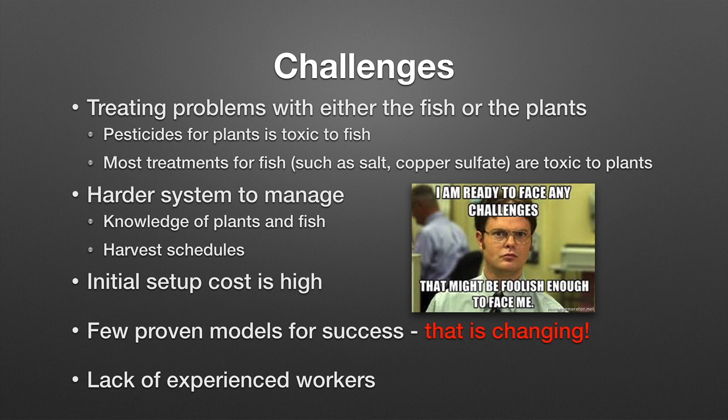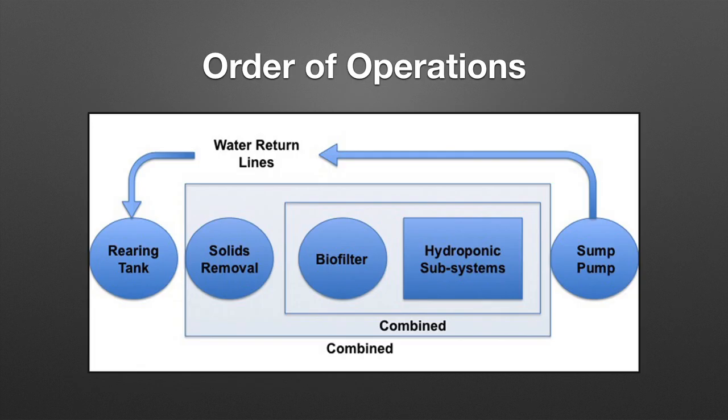You really have to know a lot about a lot of different components in aquaponics. You have to be a plumber, a construction worker, an aquaculturist, and a plant person — you need both a green thumb and a blue thumb for this kind of work. Aquaponics systems almost all follow the same order of operations. We have a fish tank, generally some sort of solids removal, some sort of biological filter, a hydroponic subsystem, and a sump pump where water is collected and then returns back into the fish tank.